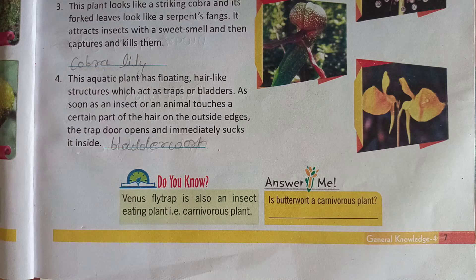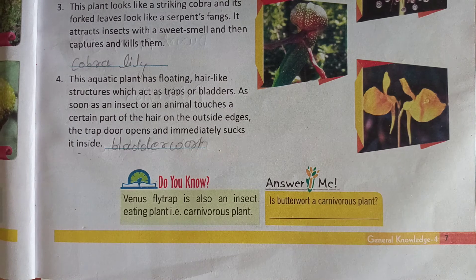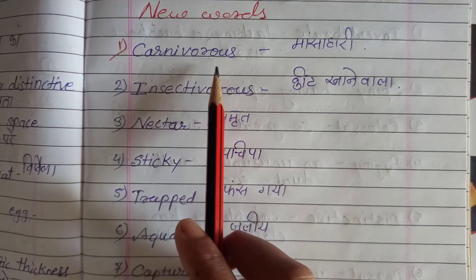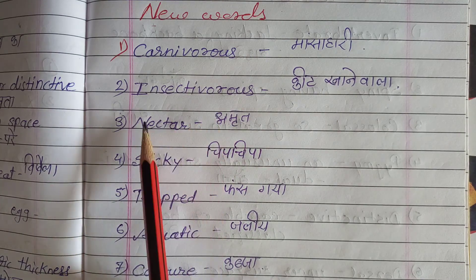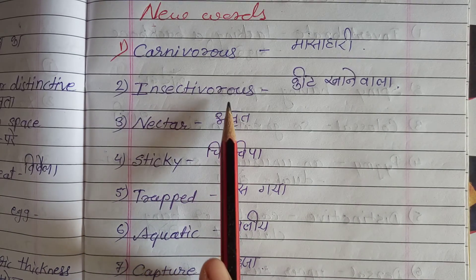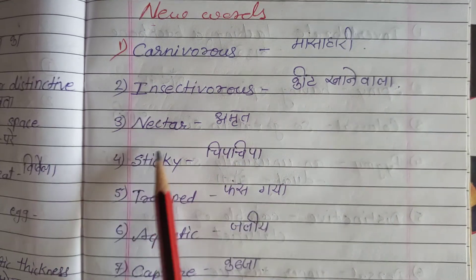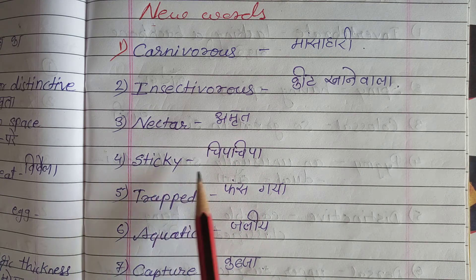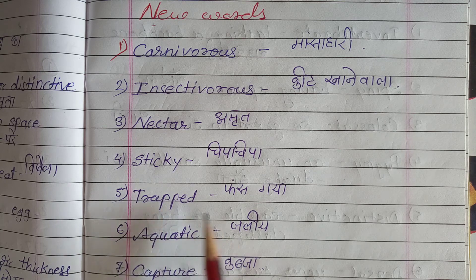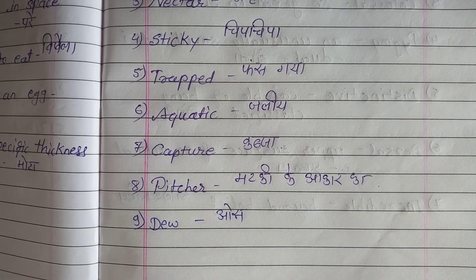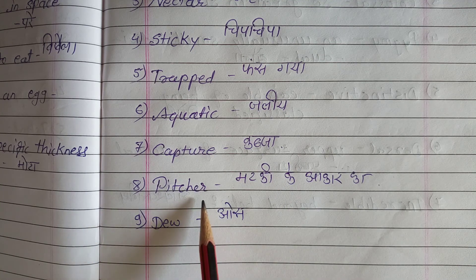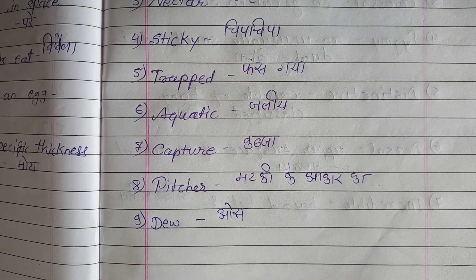New words: Carnivorous — C-A-R-N-I-V-O-R-O-U-S — means Masahari. Insectivorous — I-N-S-E-C-T-I-V-O-R-O-U-S — means Keet Khane Waala. Nectar means Amrut. Sticky means Chipchipa. Trapped means Phans Gaya. Aquatic — A-Q-U-A-T-I-C — means Jaliiya. Capture means Kabja. Pitcher means Matki ke Aakaar ka. Dew means Ose.